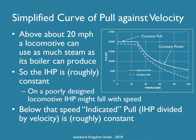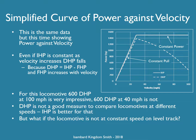As speed increases, the gap between indicated power and drawbar power — that gap being frictional power — increases, so the gap between the solid line and the dashed line gets bigger. On the power versus velocity curve, up to around 20 miles an hour pull is constant and indicated power is increasing with speed. Above that speed, power is constant. The gap between drawbar power and indicated power gets larger and larger as speed increases and more of the indicated power is lost in friction.